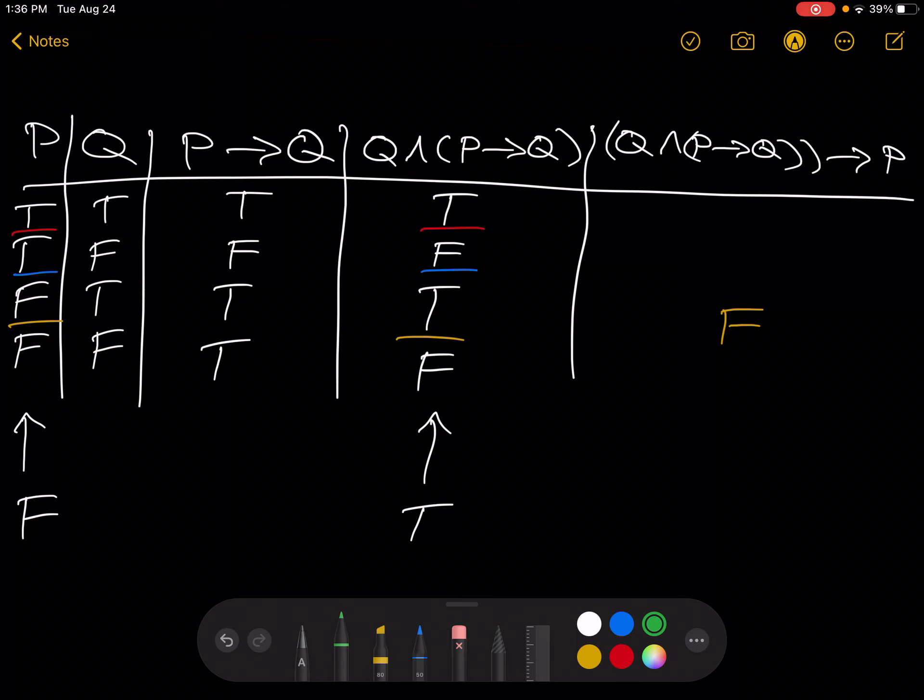And we have false, so it doesn't matter what that thing is. It's automatically true. So, we have true, true, false, true.